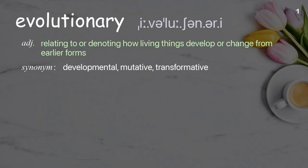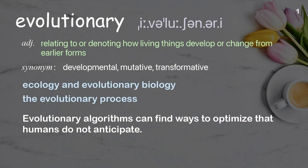Evolutionary: relating to or denoting how living things develop or change from earlier forms. Examples: ecology and evolutionary biology, the evolutionary process. Evolutionary algorithms can find ways to optimize that humans do not anticipate.